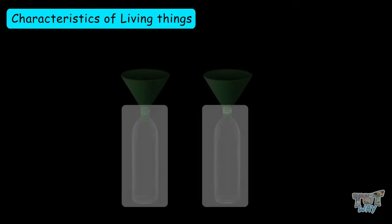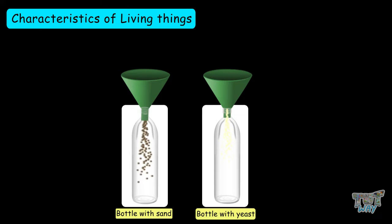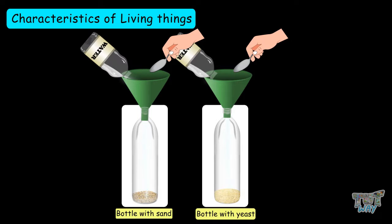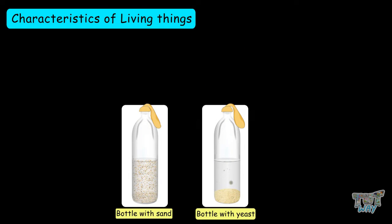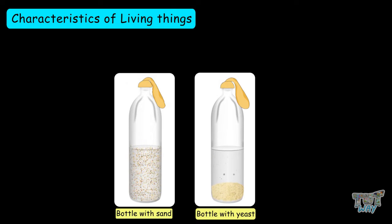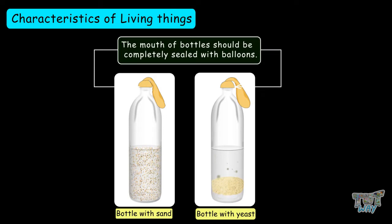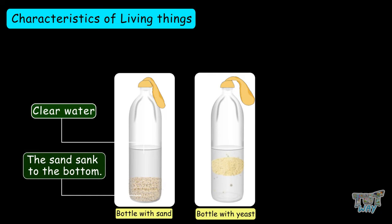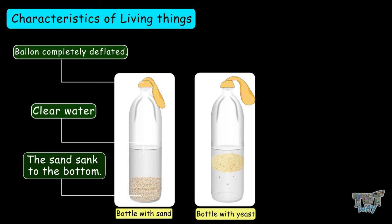Now, take two clear bottles. Add some sand to one and yeast to the other. Add water and a little sugar. Take two balloons and cover the mouths of the bottles with them — the mouths should be completely sealed by the balloon. Now, look at the following picture. In the sand bottle, the sand has sunk to the bottom. No changes were visible in the bottle; the water is clear and the balloon is completely deflated.